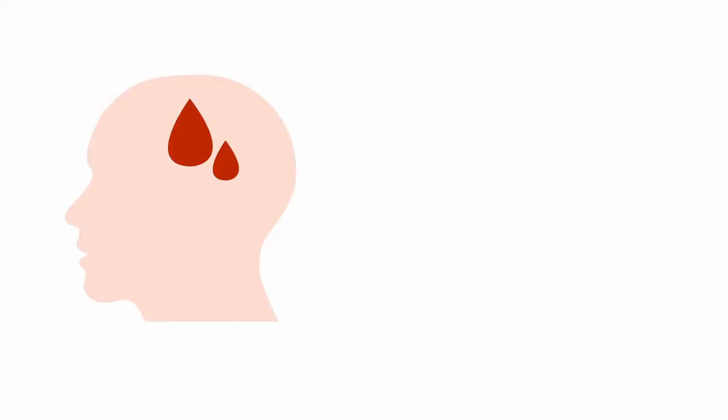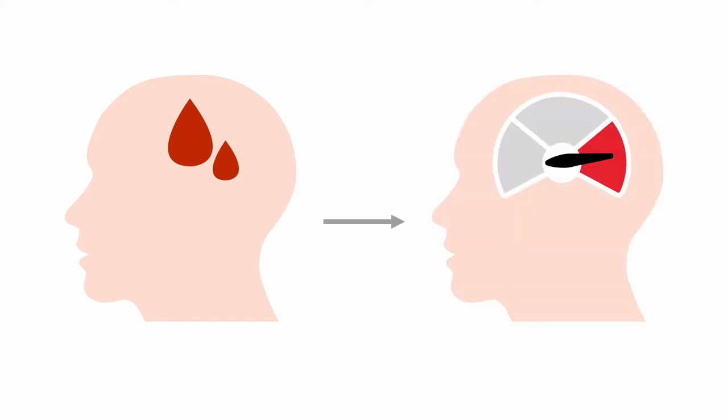A spontaneous intracerebral hemorrhage becomes evident when intracranial bleeding abruptly raises intracranial pressure, causing sudden severe headache, vomiting, and/or loss of consciousness, or causes brain dysfunction by compressing or damaging adjacent brain tissue, resulting in what is known as focal deficits, such as weakness, aphasia, loss of sensation, imbalance, etc.